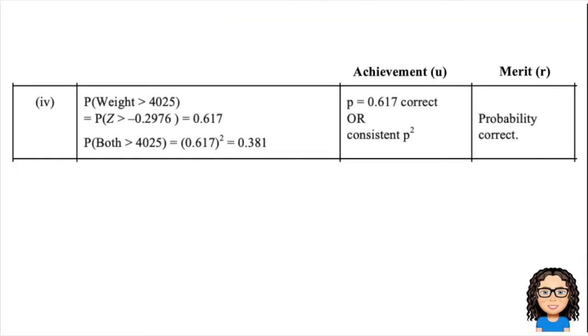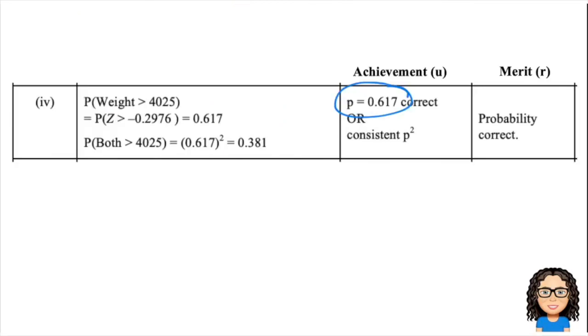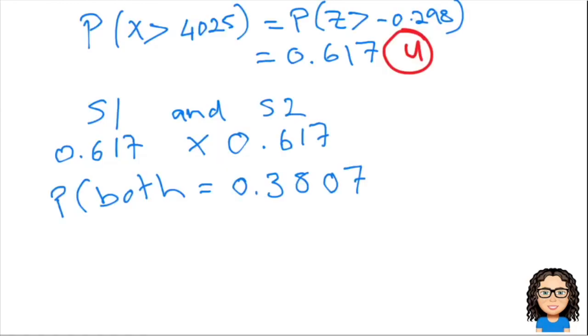So let's have a look at how this gets marked. If we were able to get the probability correct 0.617, if we were able to get that value there through either the graphics calculator or the normal table, that gets us a U. And if we're able to get the probability correct of 0.381, then that gets us our value of R.